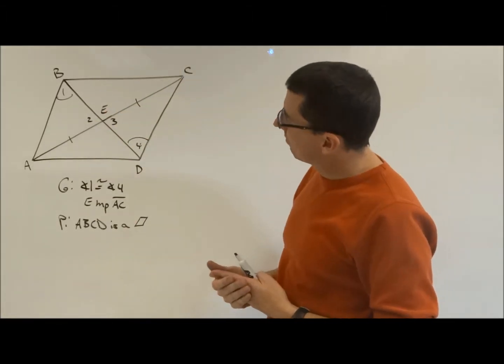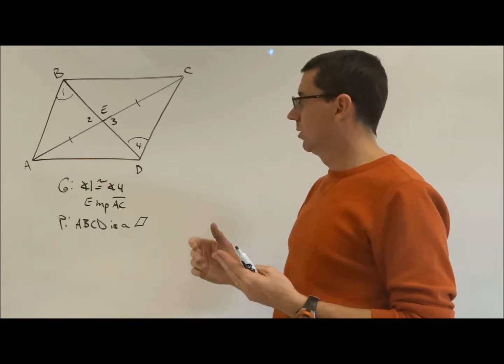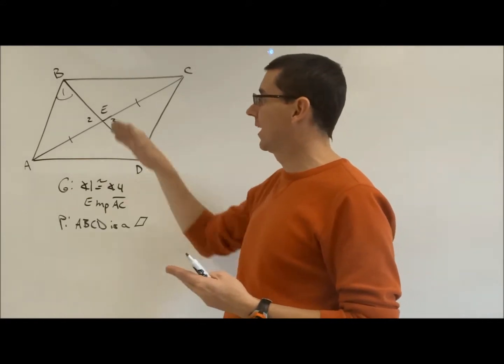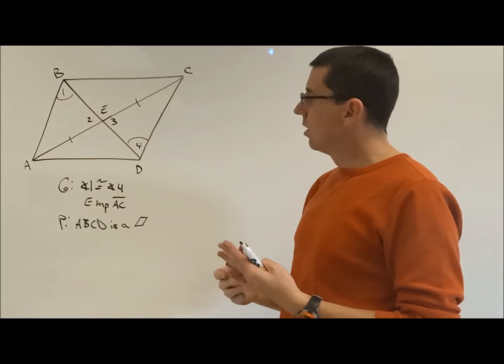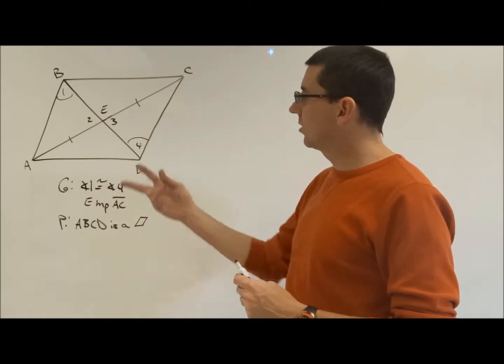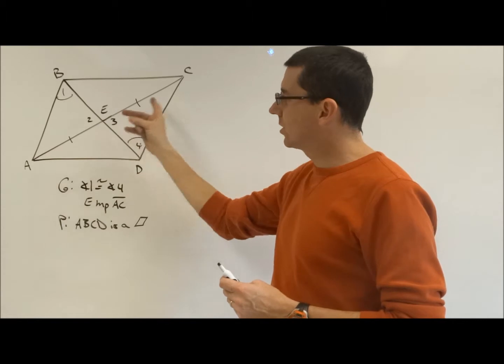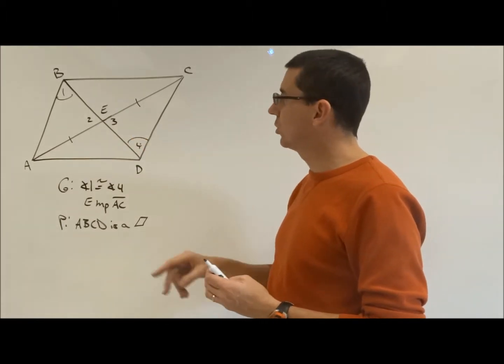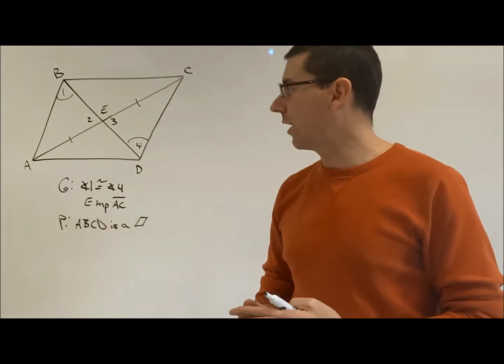Opposite sides congruent. I don't have any opposite sides marked congruent. Opposite angles congruent. I don't have any whole angles marked congruent. Fourth one was the diagonals bisect each other. I got half of the diagonals bisecting each other. If I could show that E's the midpoint of segment BD, we could go about that route.